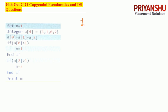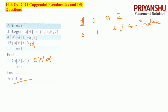The last question is an array-based question. The array has indices 0 through 6 with values: 1, 0, 1, 1, 0, 2. a[0] equals a[1] AND a[2] — that is 1 AND 1, still 1. If 1 greater than 1 — false. a[2] = 0 — 0 greater than 1 — false. So m is printed and m is still 1. The answer is 1.